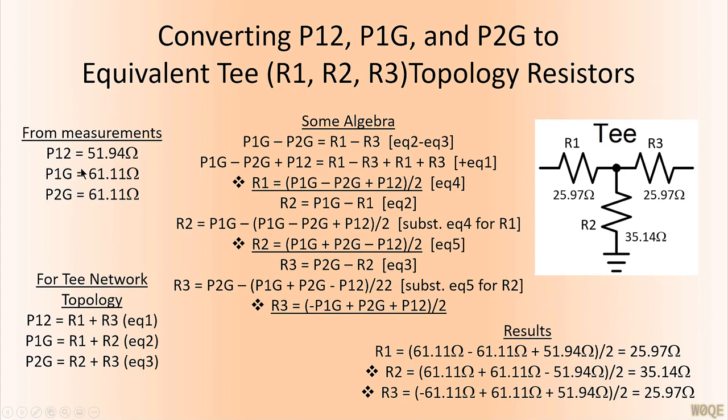Now we will take the three values that we measured, P1-2, P1G, P2G. Of course, in this case, they're calculated values and your values will be different. But we'll take those values and we need to solve for the components in some topology of an attenuator.